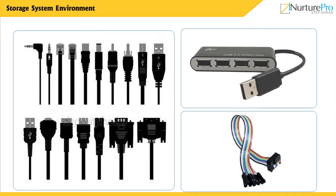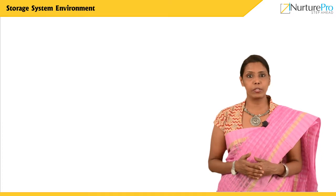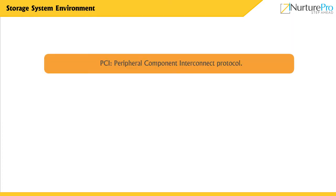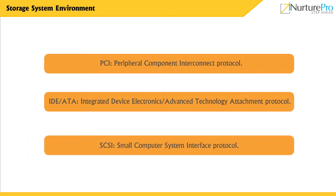A bus is the data transmission path between computers. Logical objects are the set of protocols for communication between the host and storage system. PCI is an interface protocol that stands for Peripheral Component Interconnect. IDE or ATA is a protocol used on modern disks, standing for Integrated Device Electronics or Advanced Technology Attachment. SCSI is a high-end computers protocol that stands for Small Computer System Interface.